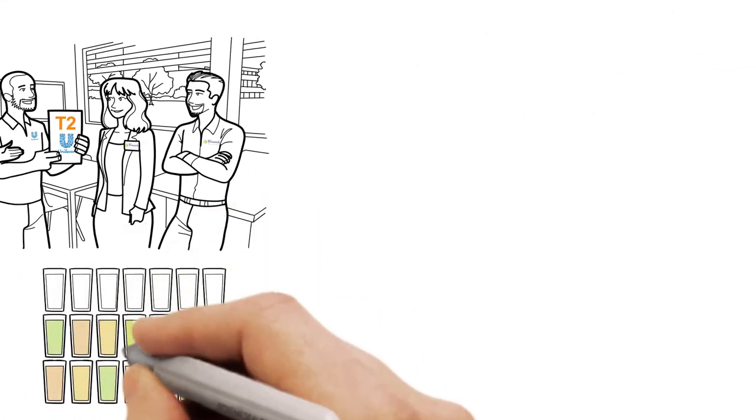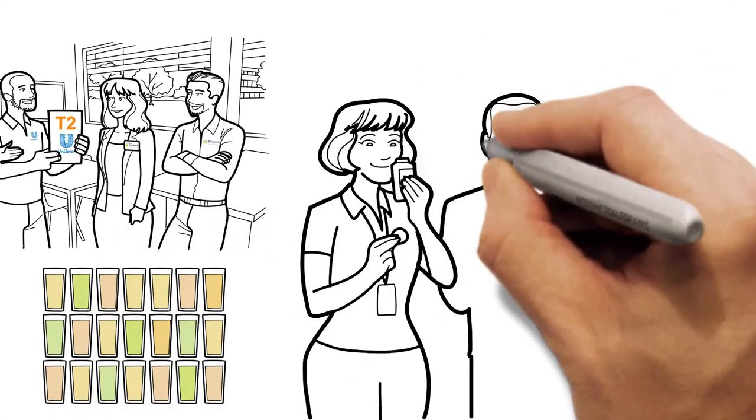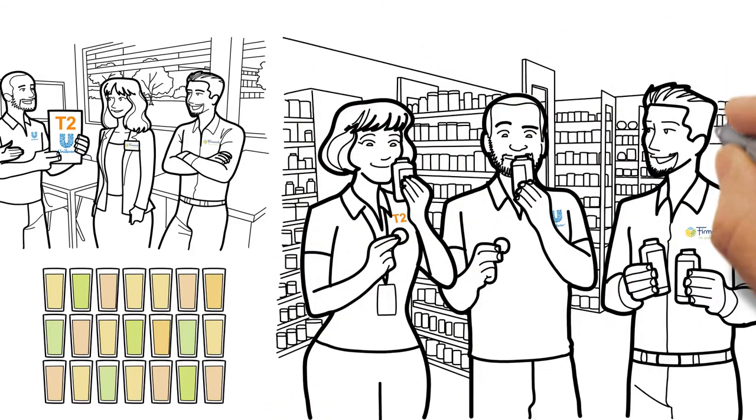In Firmenich's tasting room, they tasted 21 different prototypes and Ian then took them into the flavour room, where they smelt some of the hundreds of flavour options.